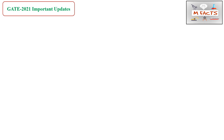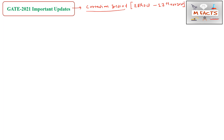Hello and welcome to our YouTube channel Metallurgical Facts. In this video I will tell you the important updates related to GATE 2021. This update is basically related to the modification — or you can say, the correction period for GATE 2021. This period is starting from 28th October and it will end on 13th November 2020.